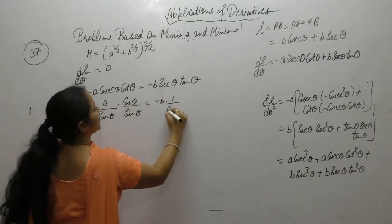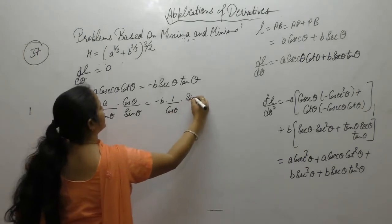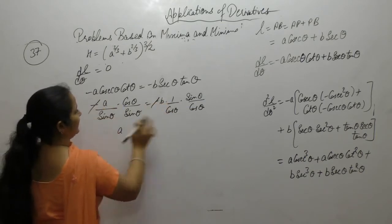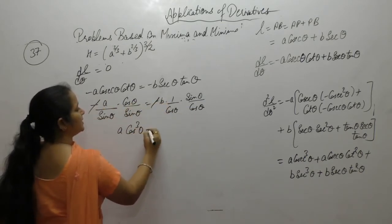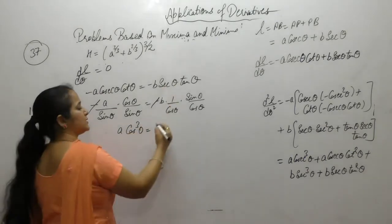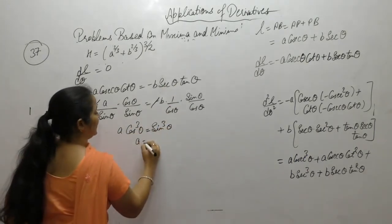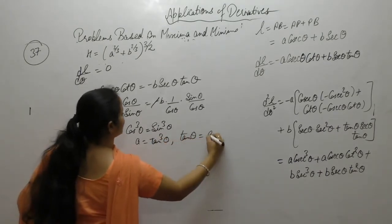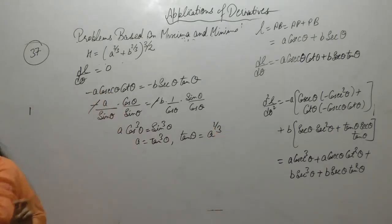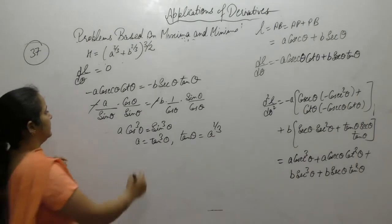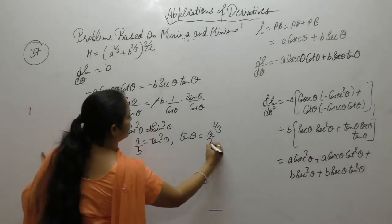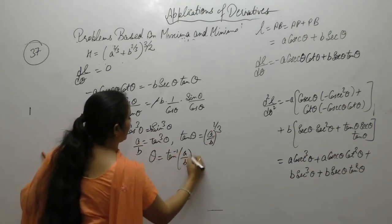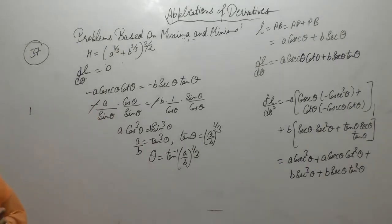Similarly, sec as 1 upon cos. The negative sin will get cancelled. We get A cos squared into cos divided by sin squared into sin. So A sin upon cos equals tan. Therefore tan theta equals (A/B)^(1/3), or theta equals tan inverse of (A/B)^(1/3).